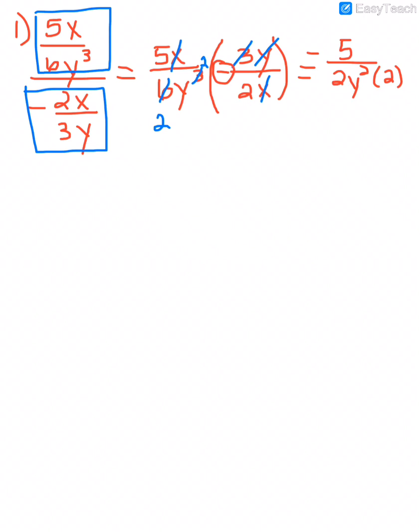So what does our answer look like? Our answer would be negative 5 over 4y squared, and then we're done.